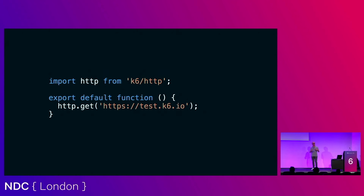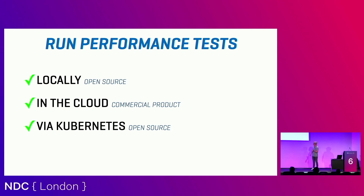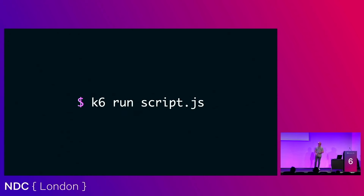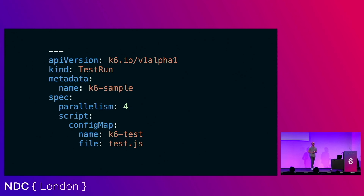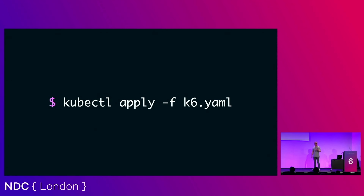You define a script and the execution happens threefold — all with the K6 binary but with subcommands. Subcommands to run local runs that consume resources on your system, you can run it in the Cloud which is their commercial product, or via Kubernetes if you want automated orchestration. If you're interested in running locally, it's nothing more than `k6 run` followed by your script and you're done. For Cloud you do `k6 cloud script.js`. For Kubernetes there are custom resource types you install, define a level of parallelism, and use `kubectl apply` to run the YAML file.